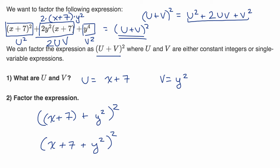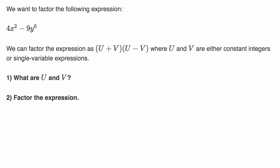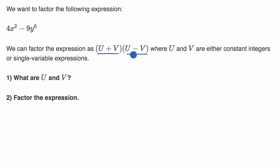Let's do another example. Here, once again, we want to factor the following expression. They're saying we can factor the expression as u plus v times u minus v, where u and v are either constant integers or single variable expressions. Pause this video and try to figure out what u and v are, and then actually factor the expression. Let's remind ourselves in general what u plus v times u minus v is equal to.